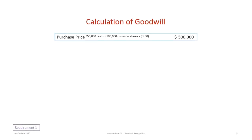We begin with the purchase price. By referring to the data, you will see that Spectre paid $350,000 cash plus 100,000 common shares at a market value of $1.50 to purchase the net assets of Zorin. That gives a net purchase price or total purchase price of $500,000.